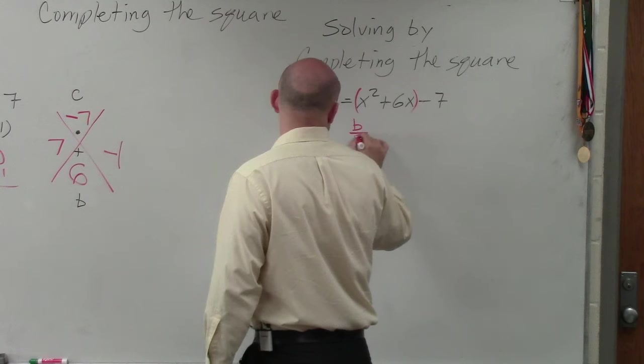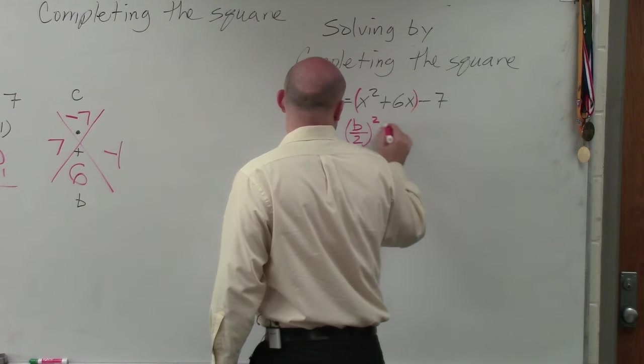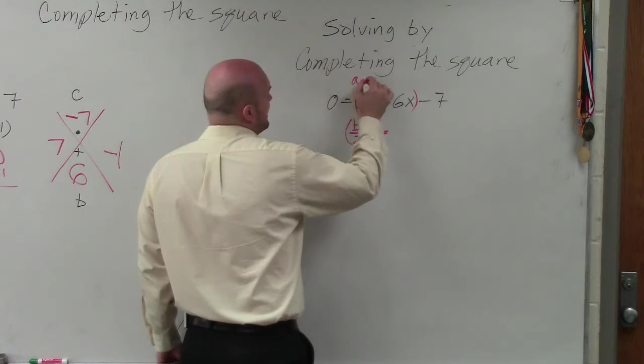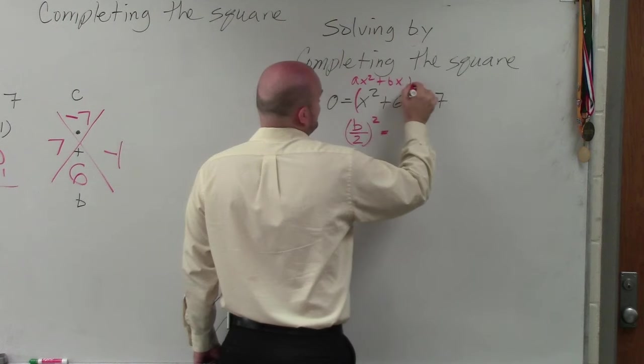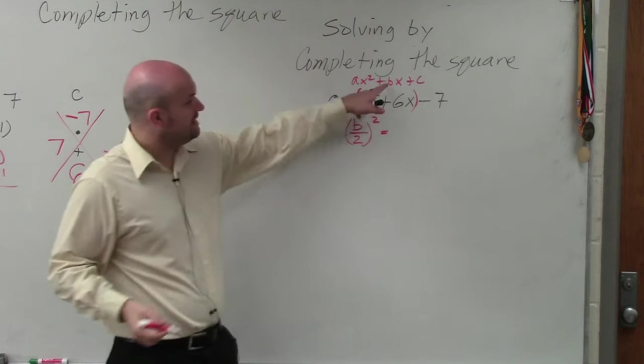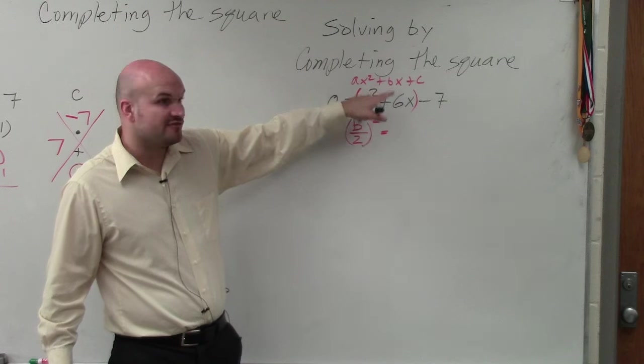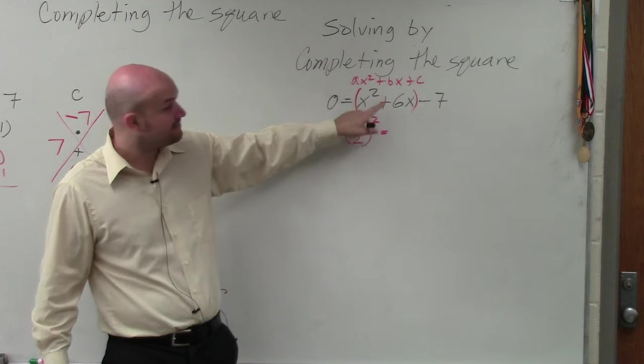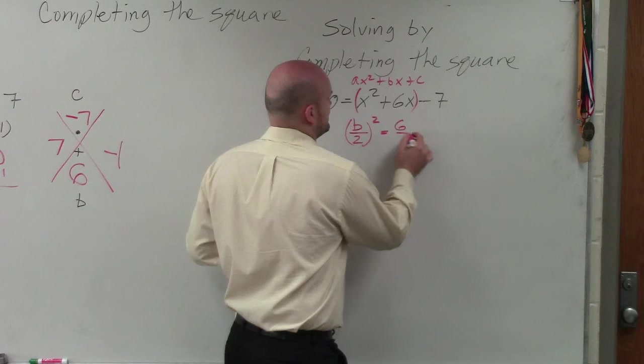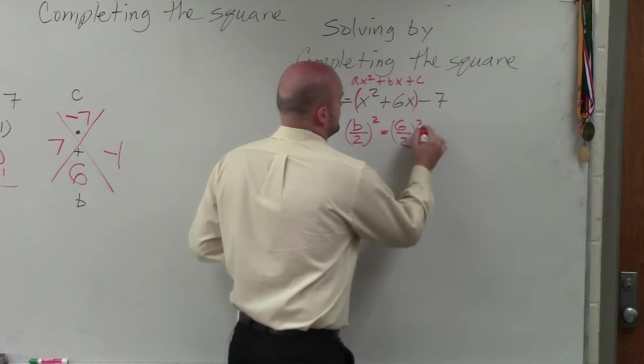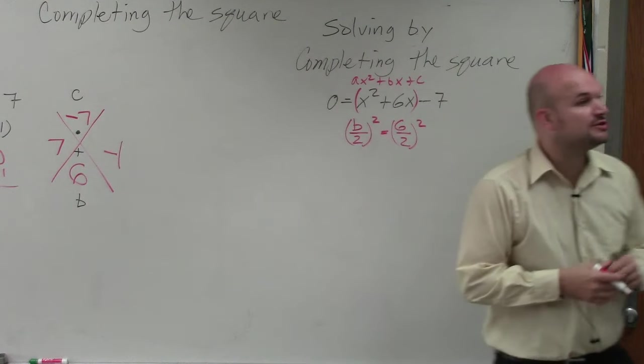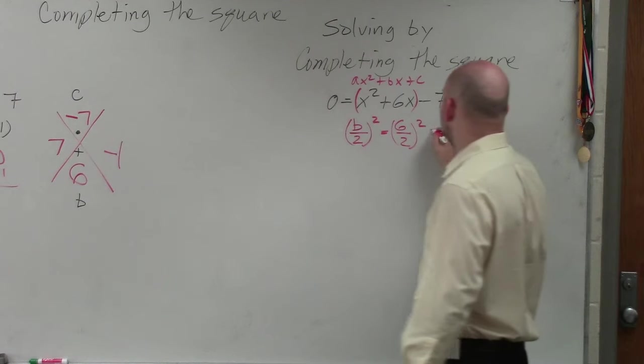Step two was to take b divided by 2 and square it. Well, remember, it's ax squared plus bx plus c. So b, in this case, is the number that's in front of my x, our coefficient. So b, in this case, is a 6. That's 6 divided by 2 squared. 6 divided by 2 is 3. 3 squared is 9.